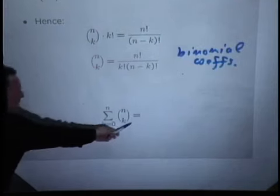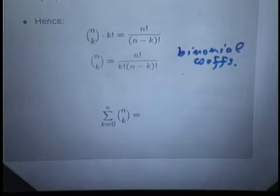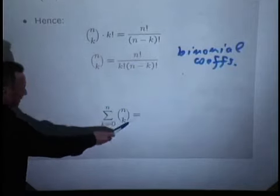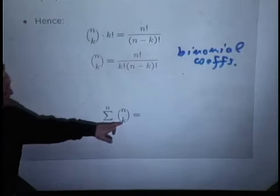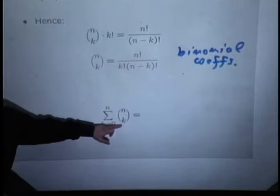But now let's try to be clever. What does this really do? What does that formula count? We're considering k element subsets. That's this number. And we're considering the number of k element subsets for different choices of k.